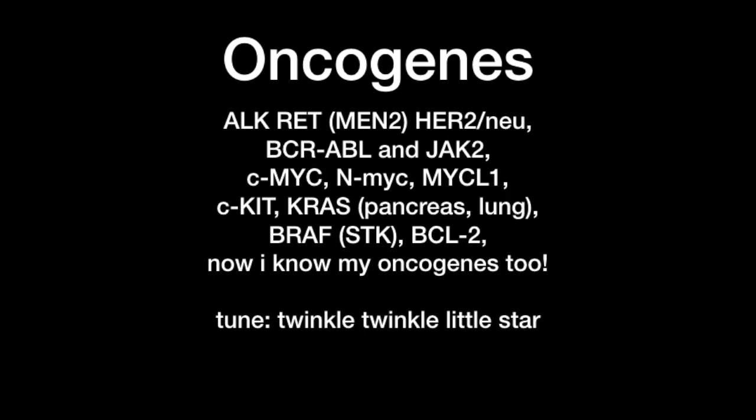CMYC gives rise to Burkitt lymphoma. NMYC gives rise to neuroblastoma — easy because of the N in NMYC and neuroblastoma. Similarly, MYCL1 gives rise to lung tumors — L for lung. CKIT gives rise to gastrointestinal stromal tumors, or GIST.